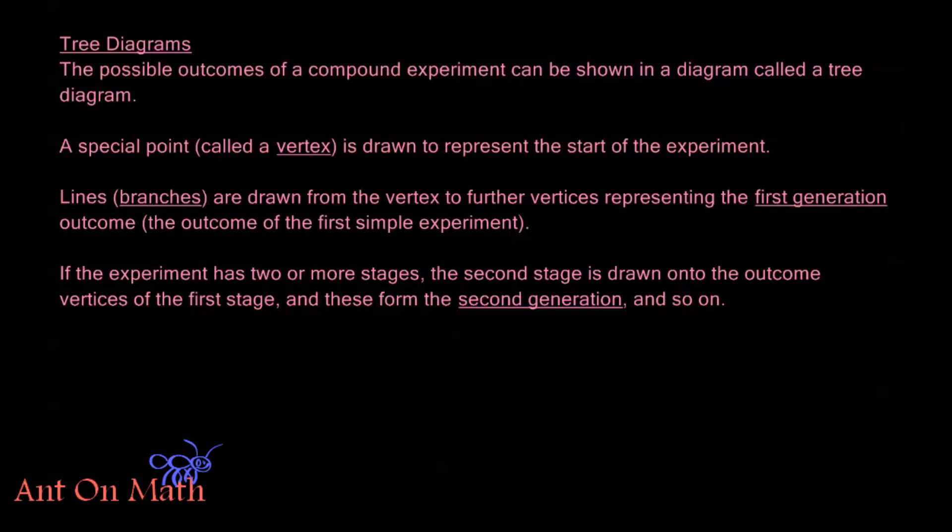Now the possible outcomes of a compound experiment can be shown in a diagram called a tree diagram. A special point, which we call a vertex, is drawn to represent the start of the experiment and then lines or branches are drawn from that vertex to further vertices representing the first generation outcome.